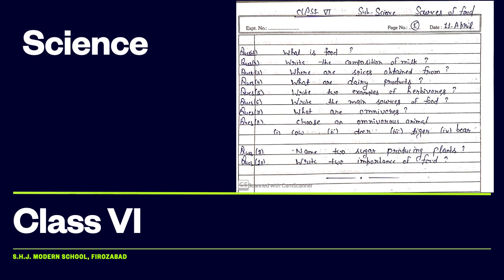Last is omnivores. Animals that eat both plants and animals are called omnivores. Wee janwar jo plants and animals dono ko khate hain, unhain omnivores, sarwahari kehte hain. Some examples are human and bear.